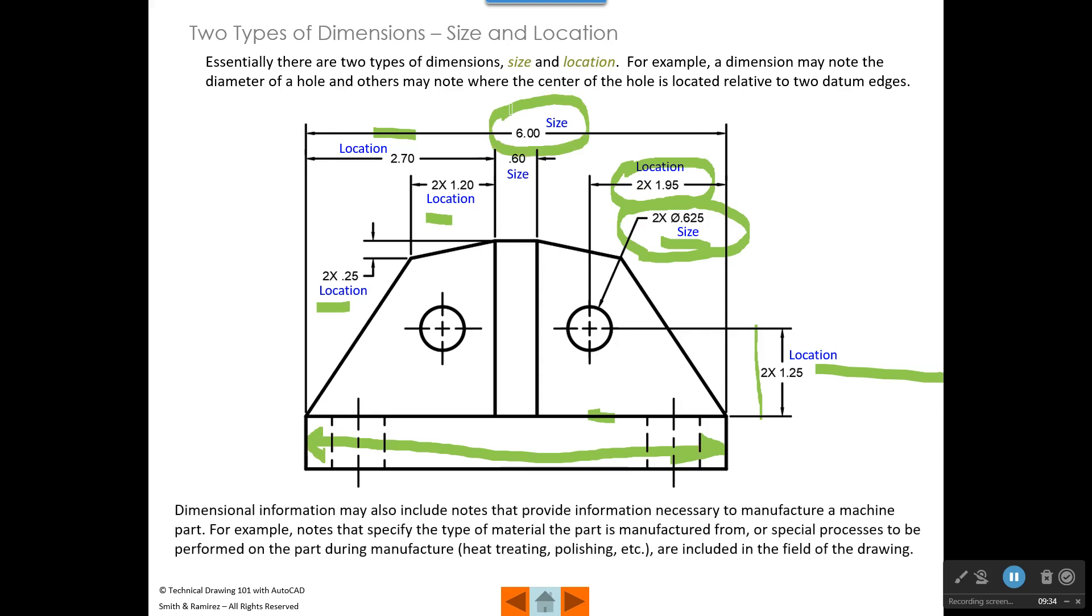Dimensional information may also include things like the material the part is made from, or special processes that may be performed on the part during manufacture, like heat treating or polishing or things like that. All of those should be notes that are included somewhere on the technical drawing that you're making.